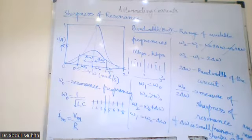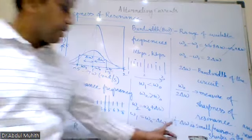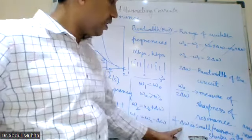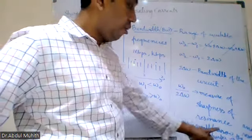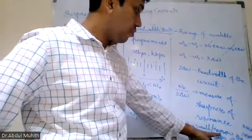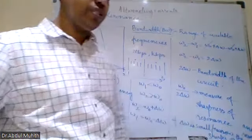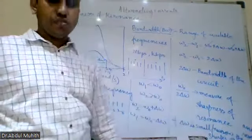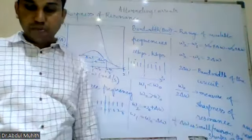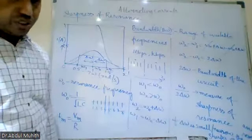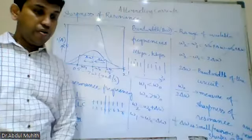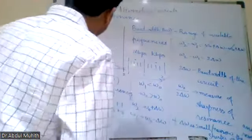To summarize: if delta omega is small or narrow, sharper is the resonance. This concludes the discussion on sharpness of resonance.